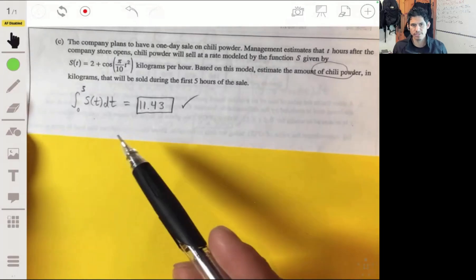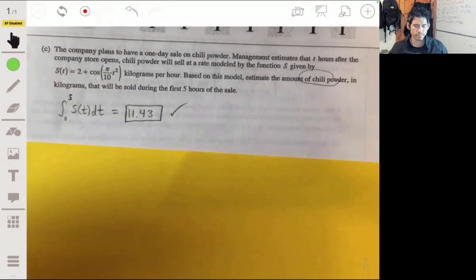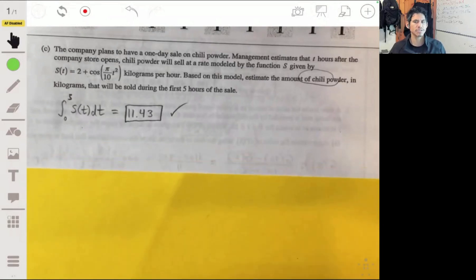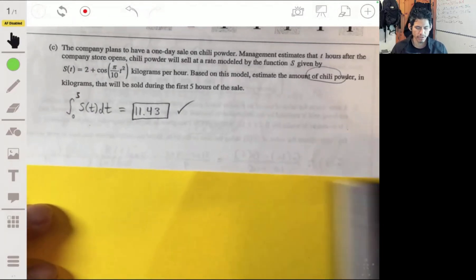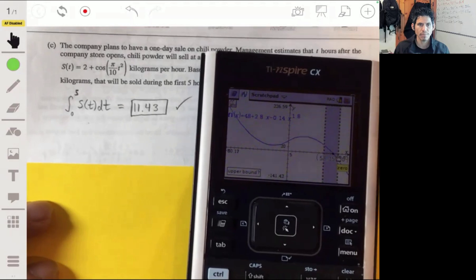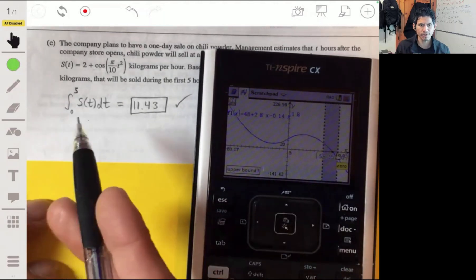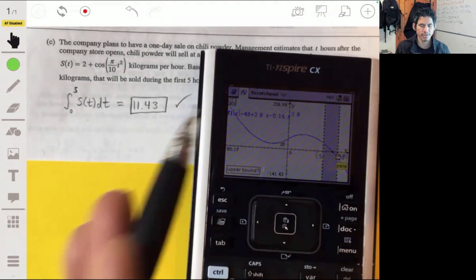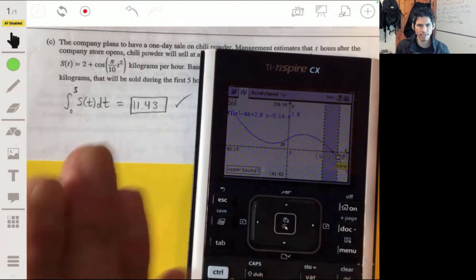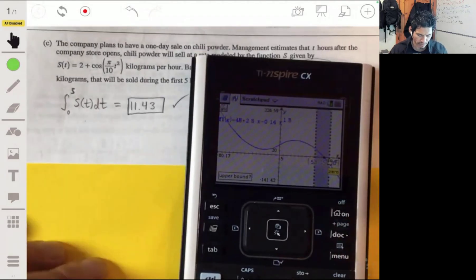This is testing if you understand the relationship between integration and differentiation and the original function. When you integrate this S(T), you're going to get the actual amount that's accumulating from that time. In this case, we're talking about the chili powder. We want to integrate from zero to five. If you integrate this, that will tell you how much chili powder is sold.